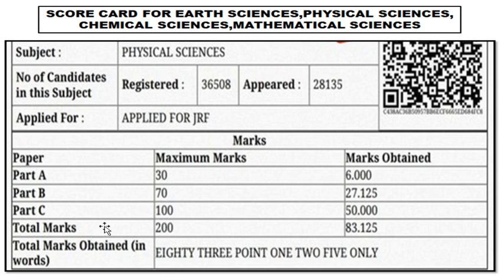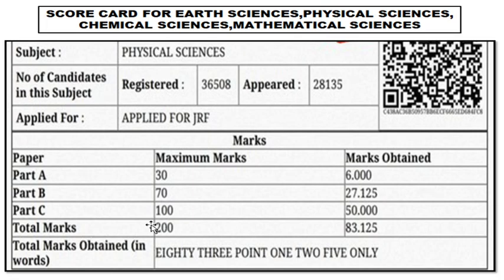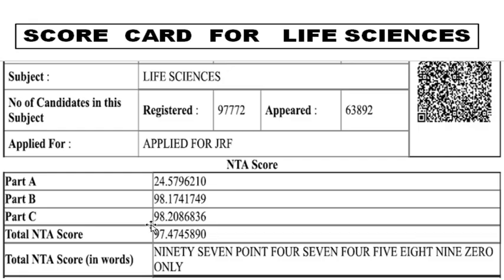If a student applied for health sciences, physical sciences, chemical sciences, and mathematical sciences, he might know how many marks he got out of 200. Whereas if you take life sciences, they will be releasing only the NTA score. The NTA score is nothing but a percentage score. So for these sciences the result will be released in percentage form, where only their marks alone will be taken into account, whereas for life sciences the NTA score or percentage score will be released.